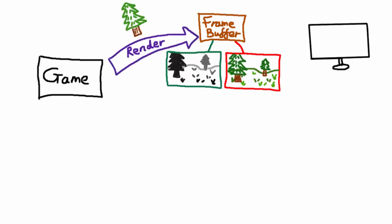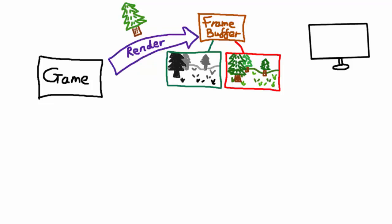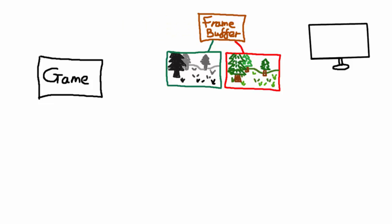When you render an object with depth testing enabled the object will first be checked against the depth information in the depth buffer. This tests whether the object you're rendering should be in front or behind the other objects that you've already rendered, and it then discards any pixels that are hidden. So if you render an object that is completely hidden by another object, the depth test will notice that and the colour buffer won't be updated at all, hence you don't see the object on the screen. There are also some other buffers like the stencil buffer, but we don't need to worry about them just yet.